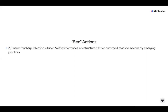The first action is to ensure that research software publication, citation, and other informatics infrastructure is fit for purpose and ready to meet newly emerging practices. This covers permanent identifiers infrastructure, repositories infrastructure for both development and record keeping, registries infrastructure, and the emerging set of infrastructure around enabling computational reproducibility — computational notebooks, computational workflow engines, and so on.